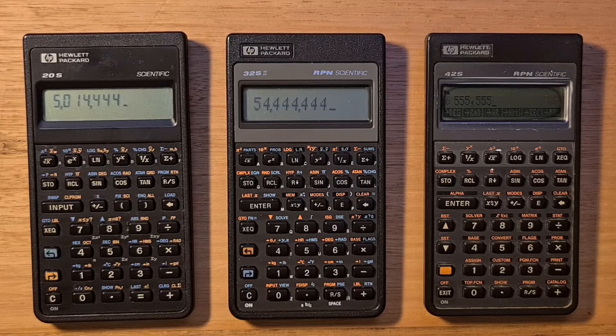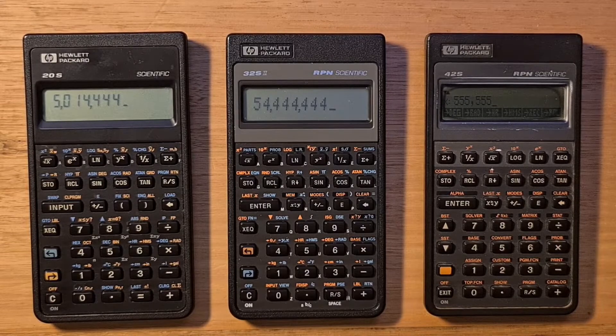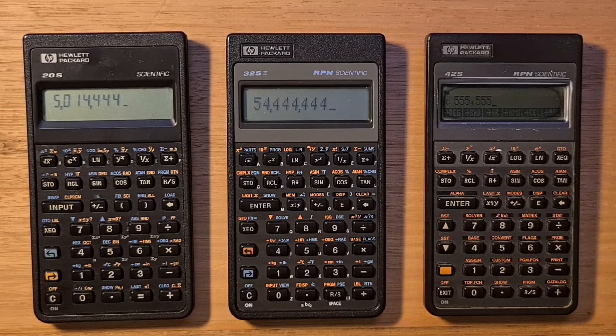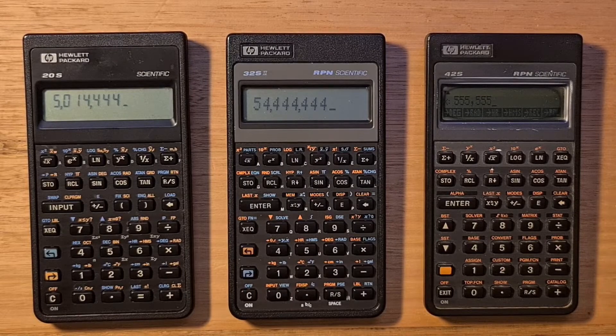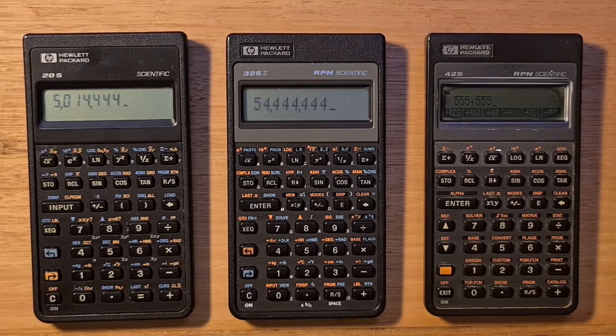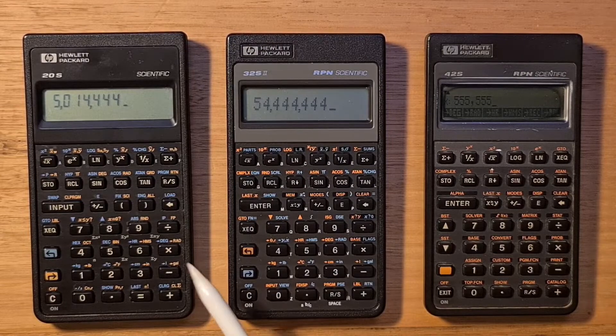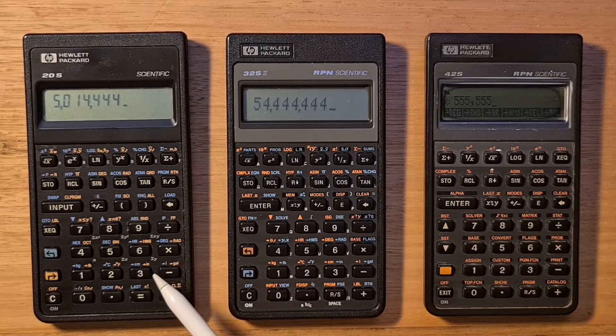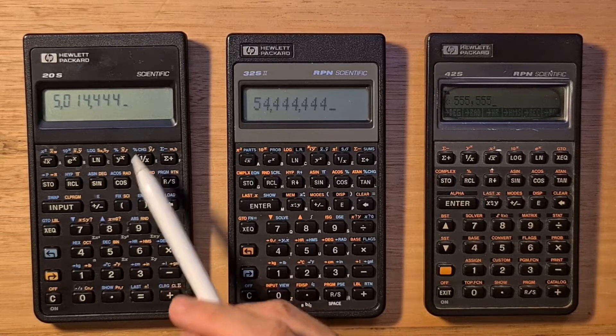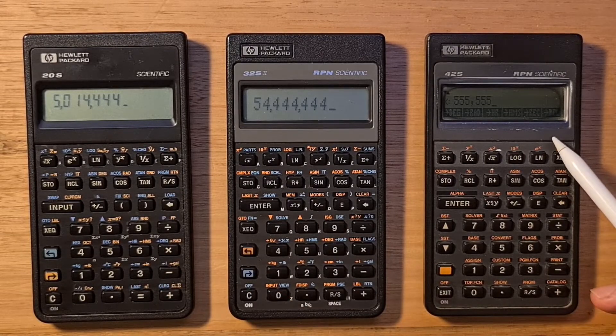The 32S was the same form factor and keyboard layout as the other ten calculators in the Pioneer series. There were three tiers of display used on the Pioneer calculators. The 32S2 used the mid-tier display that supported 12 digits, each 5 by 7 dot matrix. You can compare this to the 20S, which used a 7 segment display.